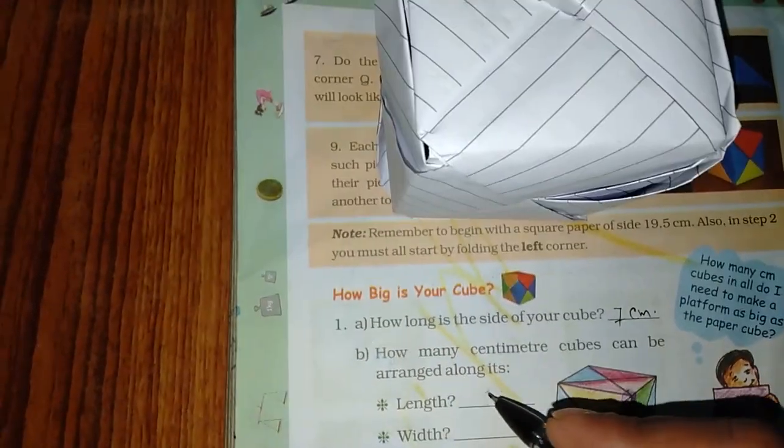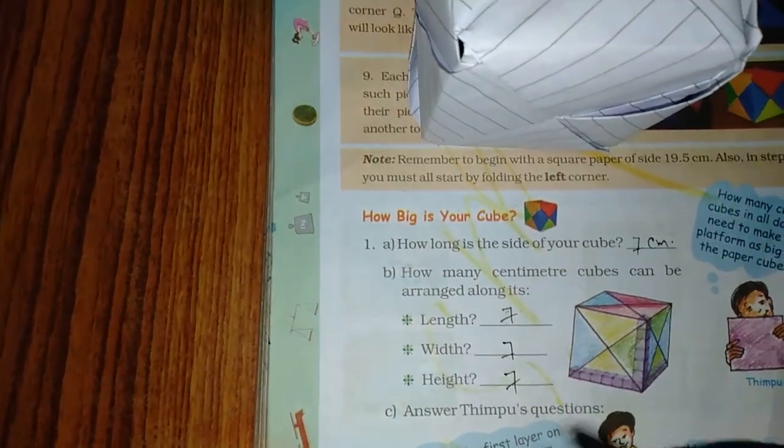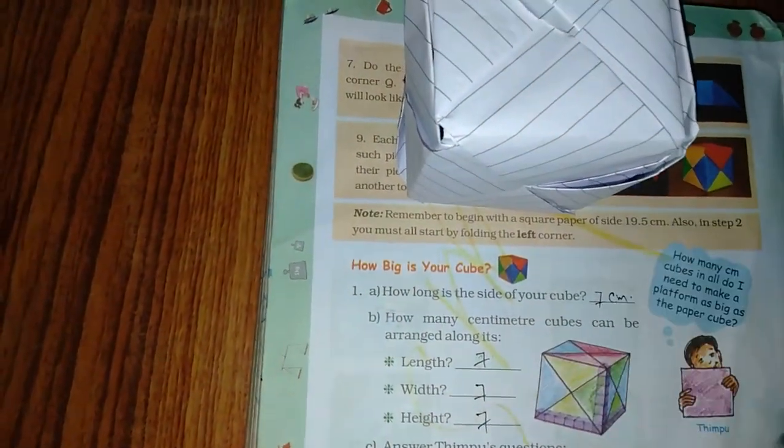7. Width? 7. Height? 7. Because what is the cube? If it's a cube, all sides are equal.